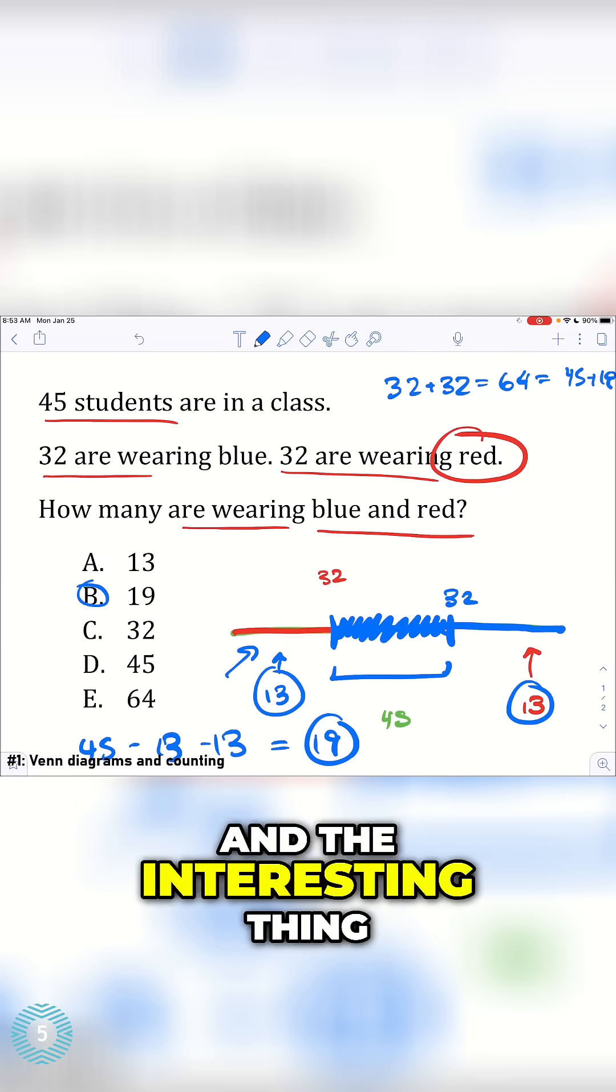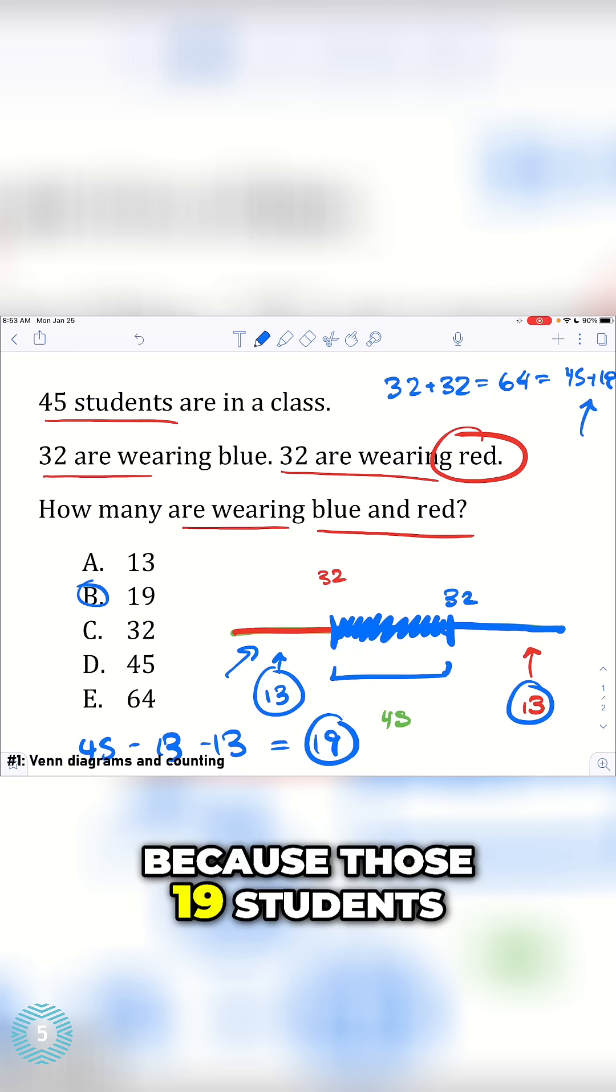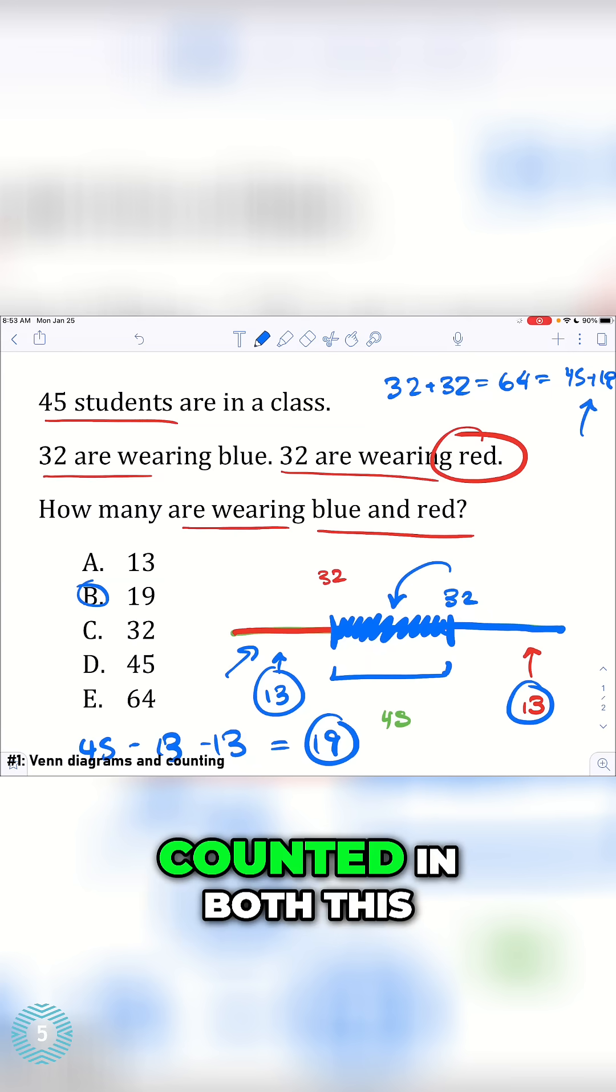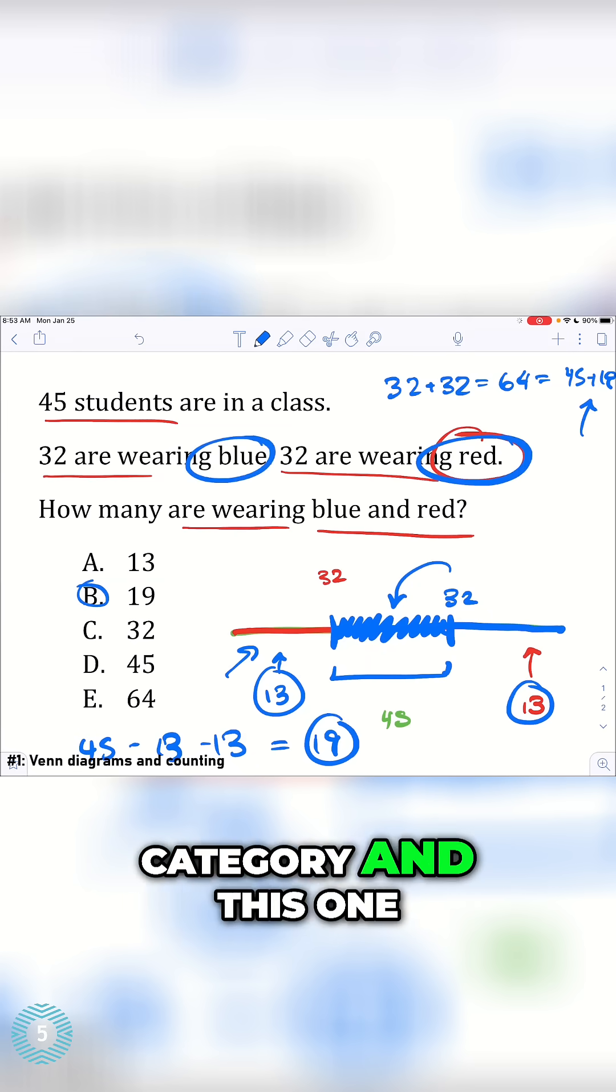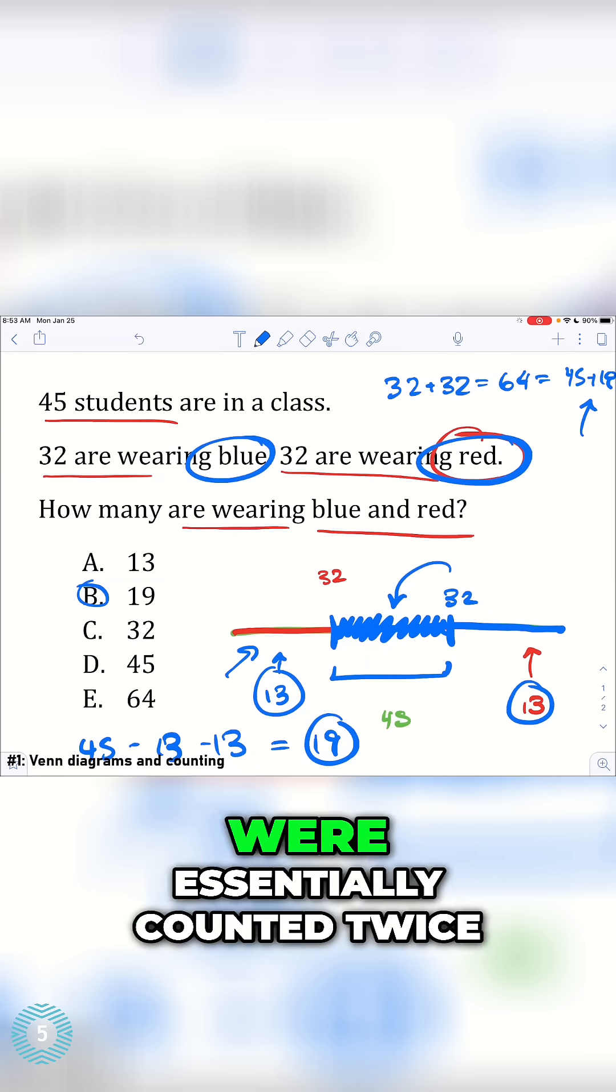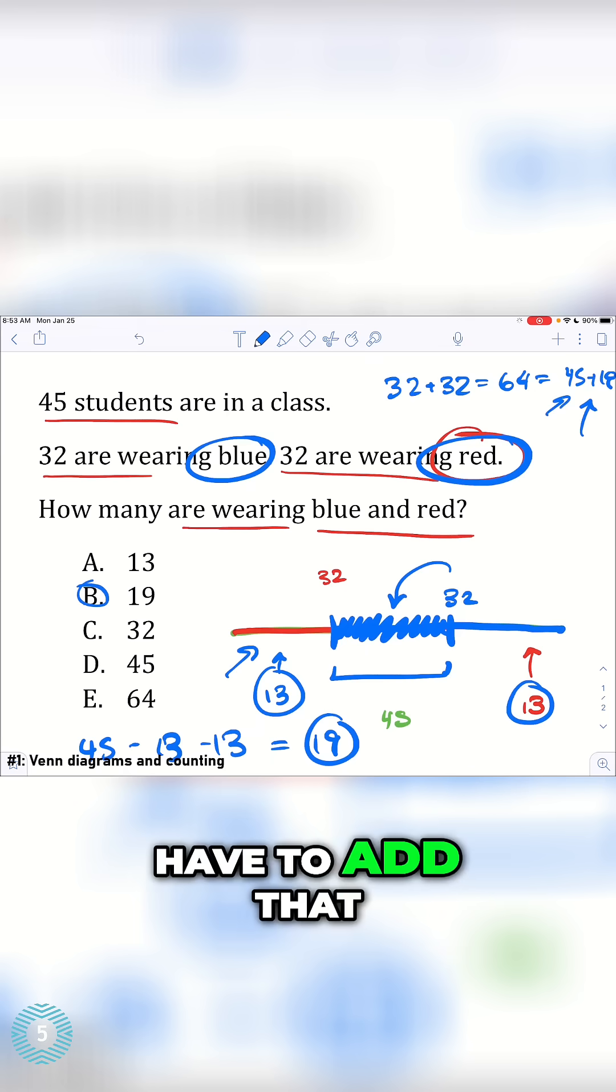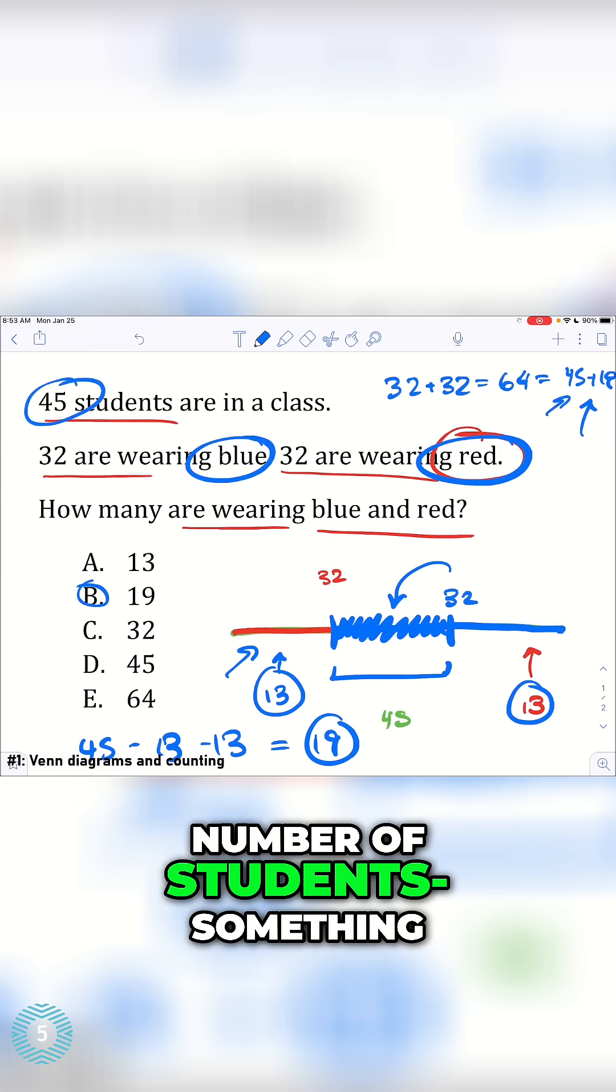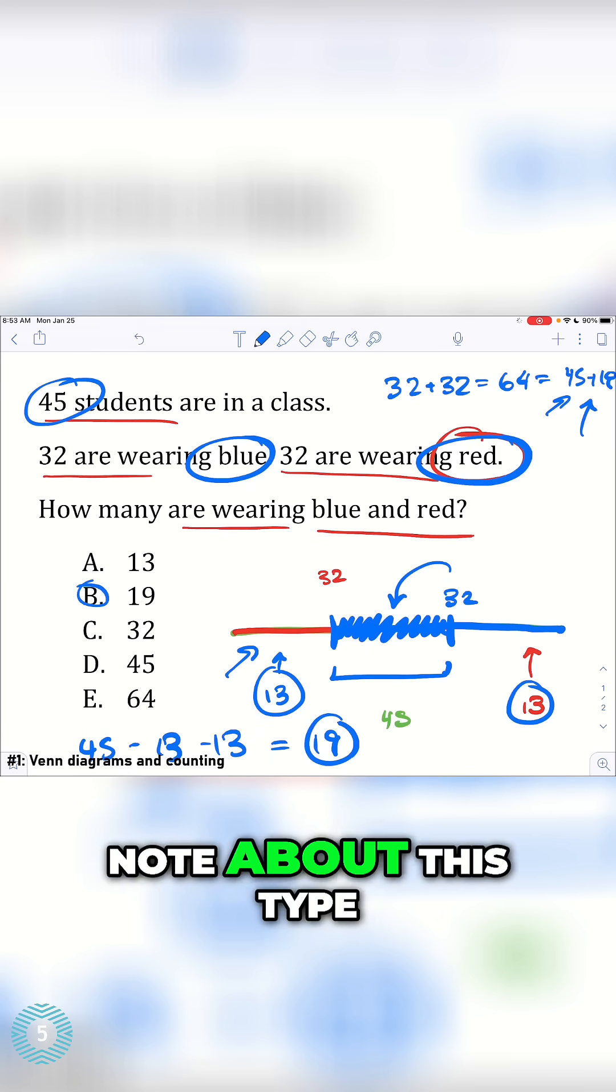And the interesting thing is, it's plus 19 because those 19 students in this region were counted in both this category and this one. They were essentially counted twice. So that's why we have to add that on to the total number of students, something interesting that you can note about this type of thing.